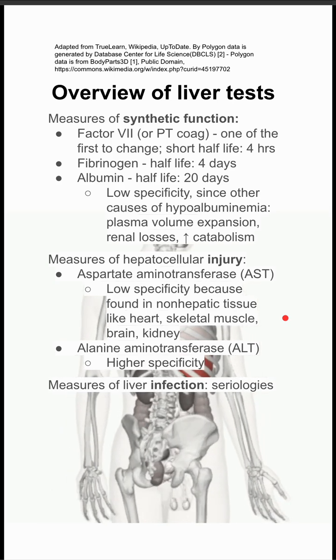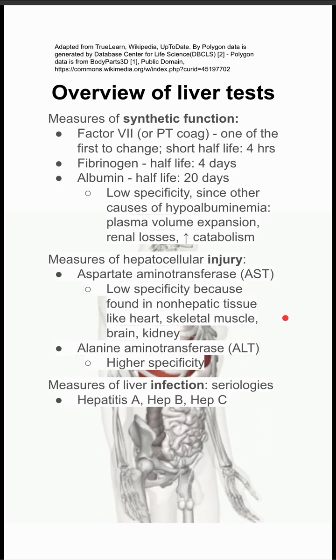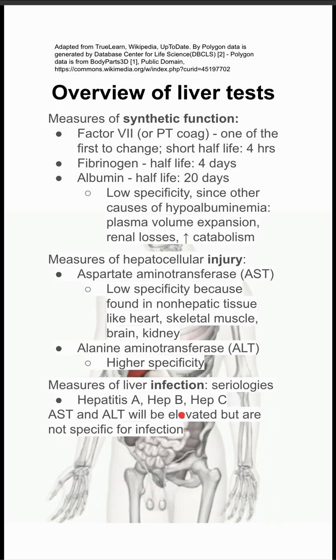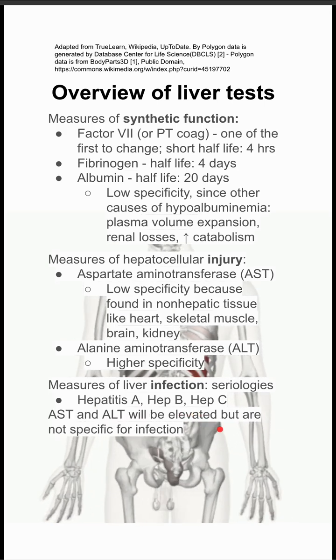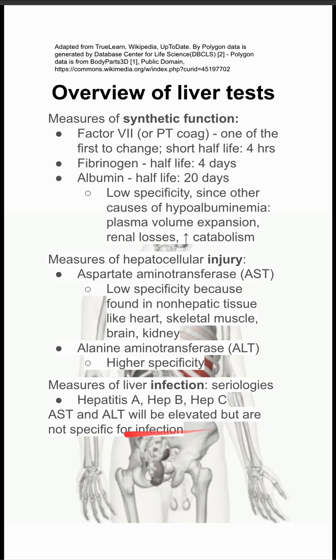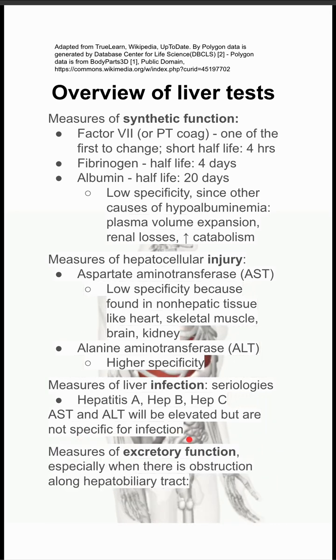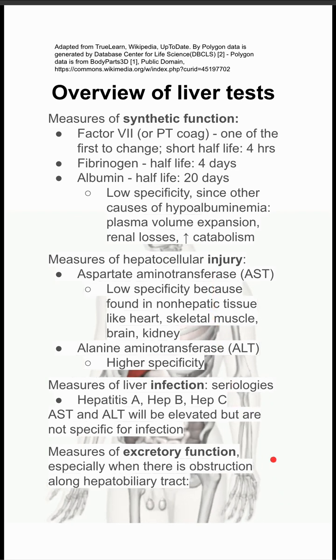Next is things of liver infection. You want the serologies of hepatitis A, hepatitis B, and hepatitis C. AST and ALT will also be elevated in liver infection, but again, not specific for infection — it could also be other types of hepatocellular damage.